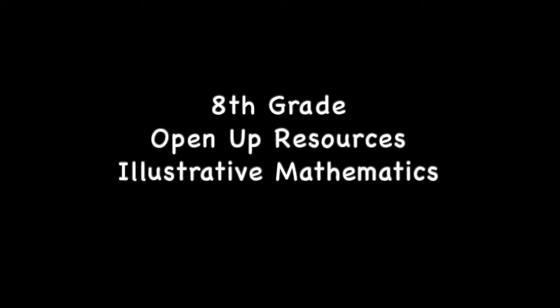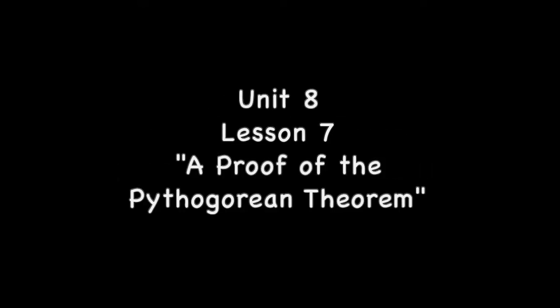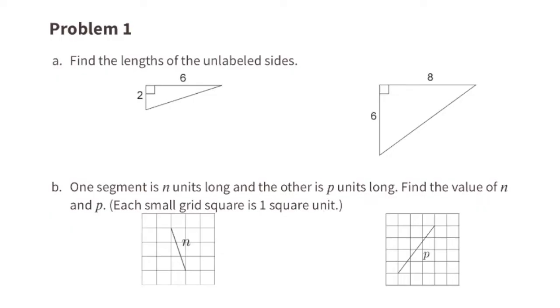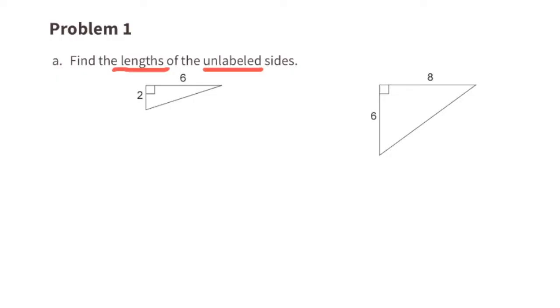Eighth grade Open Up Resources Illustrative Mathematics, Unit 8, Lesson 7: A proof of the Pythagorean theorem, problem number one. Find the lengths of the unlabeled sides. The Pythagorean theorem tells us that a squared plus b squared equals c squared.